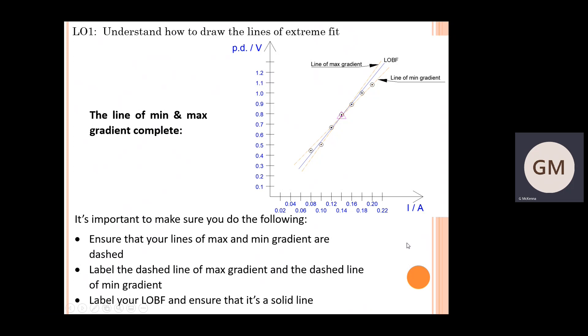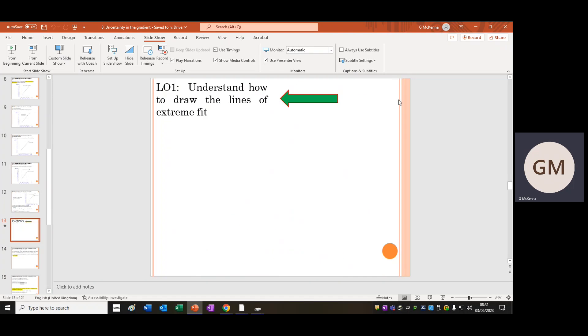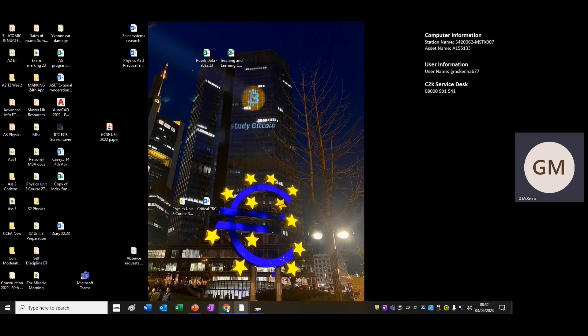That finishes the first half of this tutorial where we can now plot these lines of extreme fit. In the second part of this tutorial, we'll look at how to use that information to calculate the uncertainties in the respective gradient of a graph.